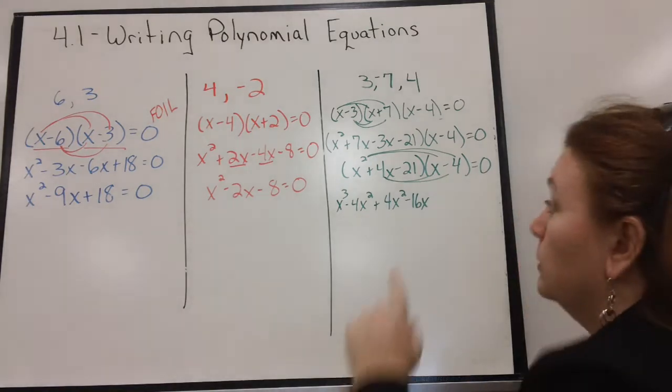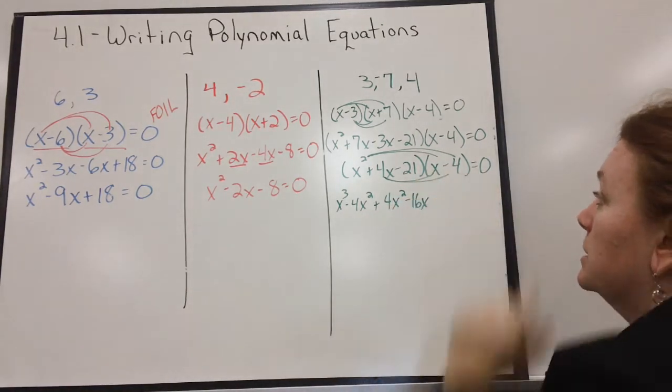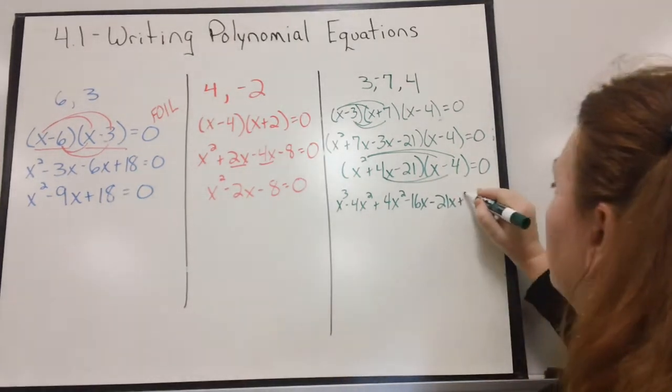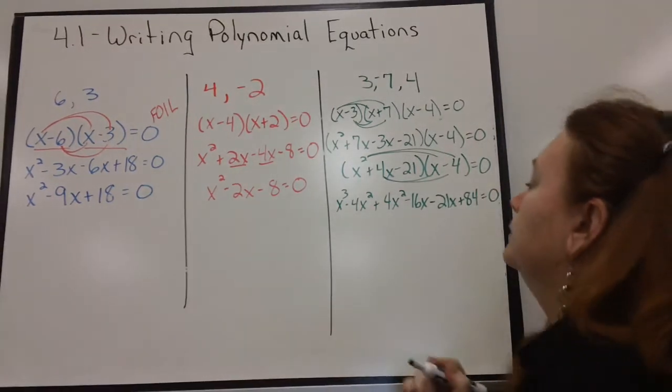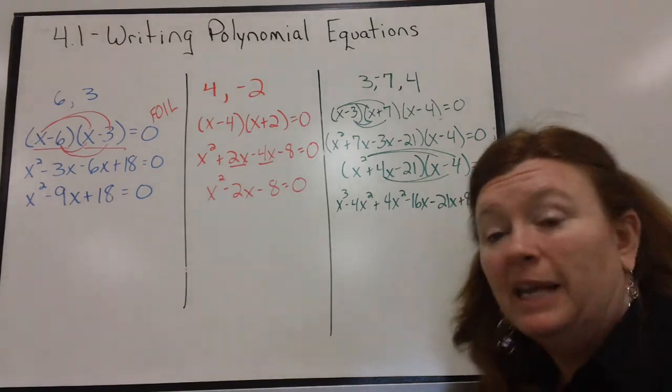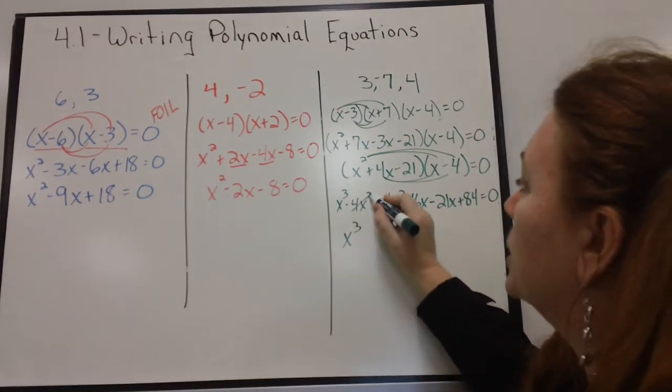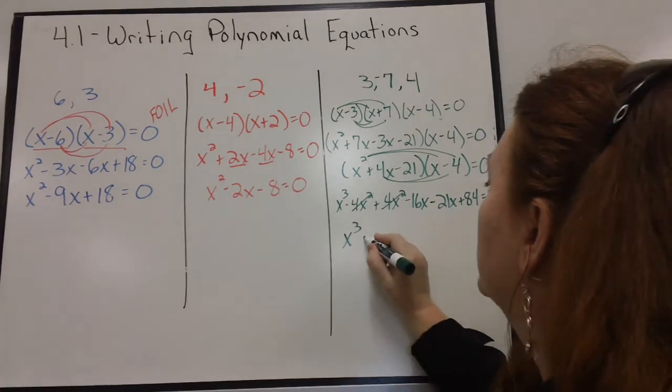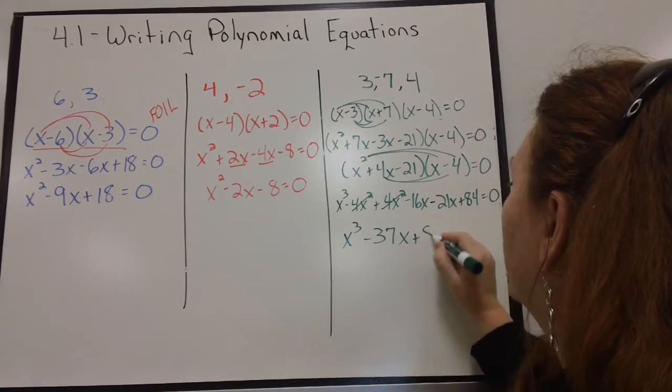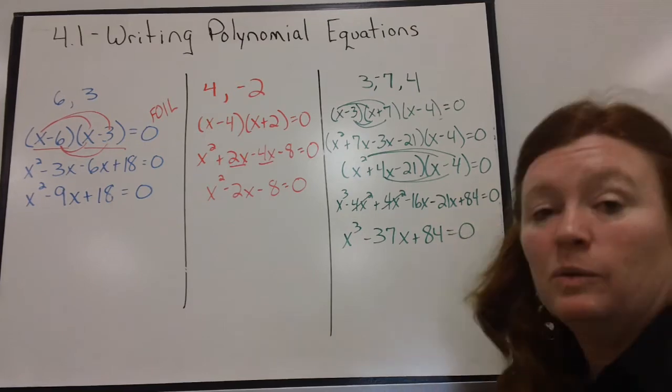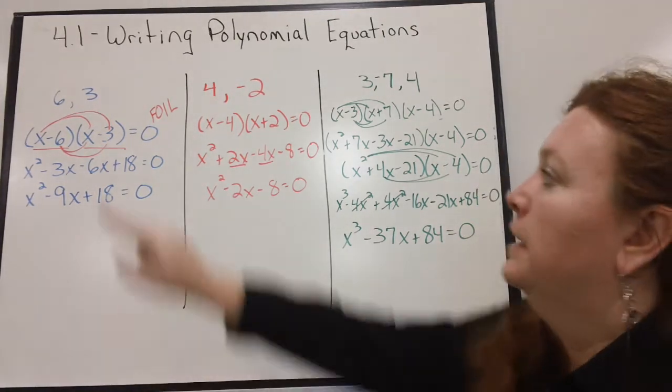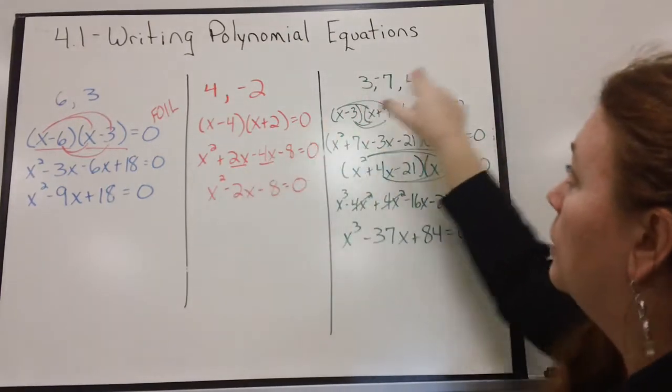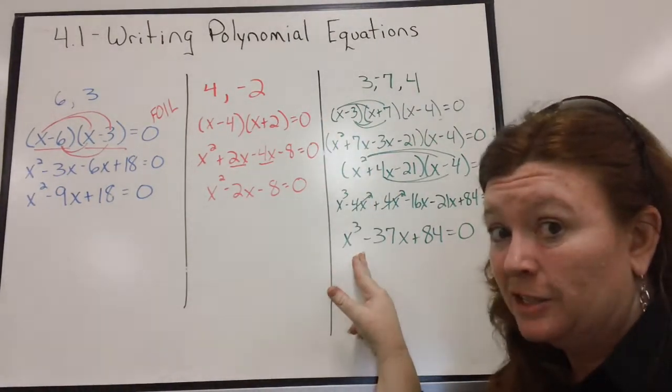I'm not done yet. I still have to multiply the negative 21 times each of these. Negative 21X and negative 21 times a negative 4 is a positive 84. Now, simplify. Combine like terms. I have an X to the third. These just so happen to cancel out. Negative 16X minus 21X is negative 37X. And I have a plus 84. And don't forget, equals 0. Hint. Two terms gave me an X squared answer. Three terms gave me an X cubed answer. Not a coincidence.